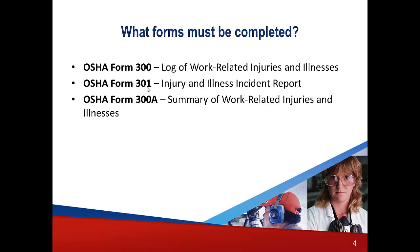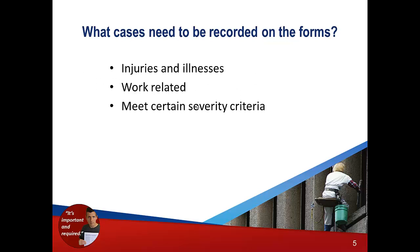Here are the three forms: OSHA Form 301 is the incident report. The OSHA 300 form is the log where you summarize key points from the incident report. At the end of each year, you tabulate everything in the log and enter it into the 300A, which is the annual summary. That annual summary is reviewed and signed by a member of management, then posted from February 1st through April 30th of the following year.